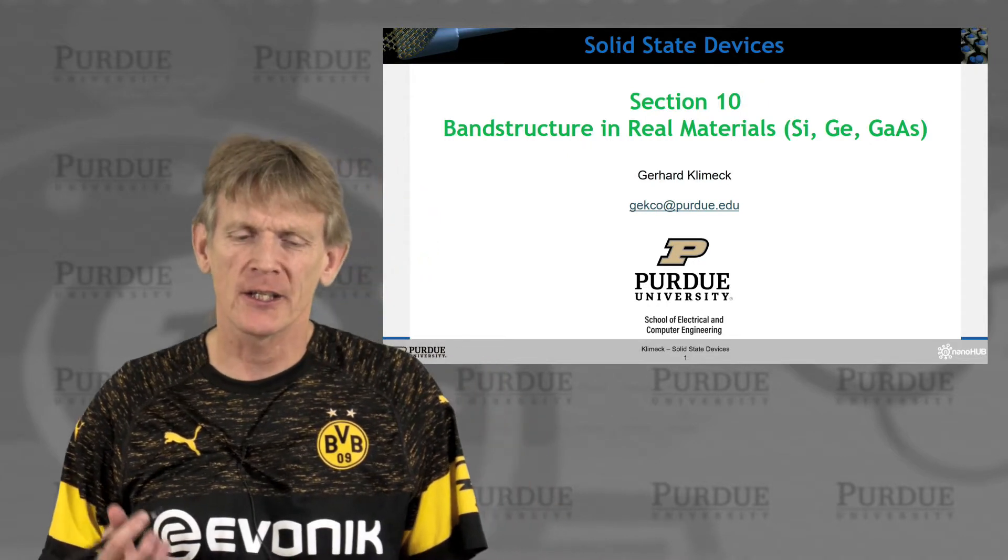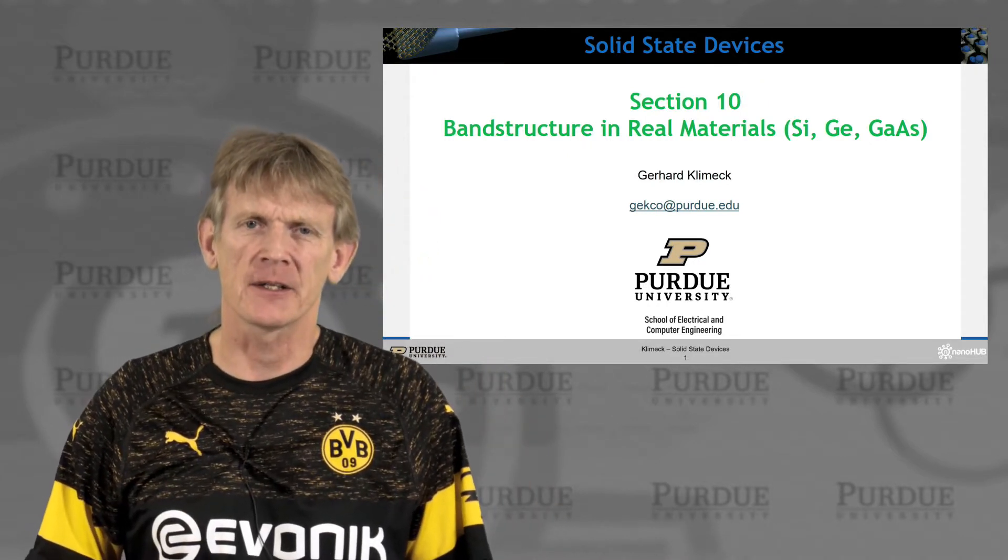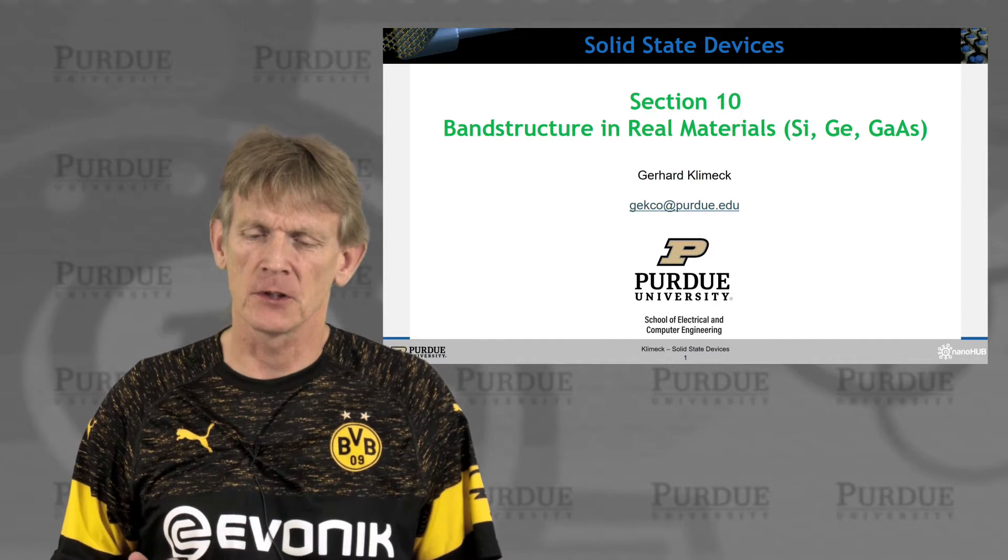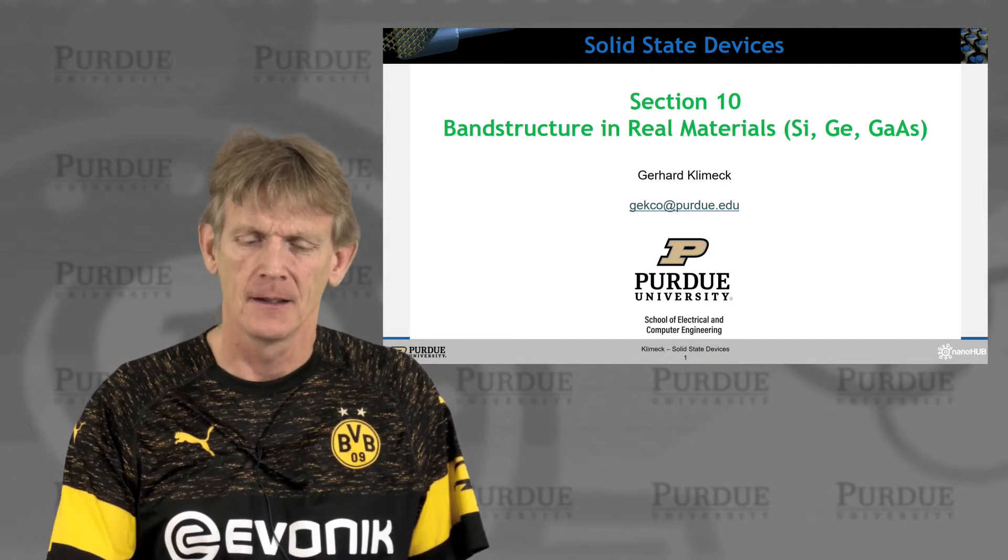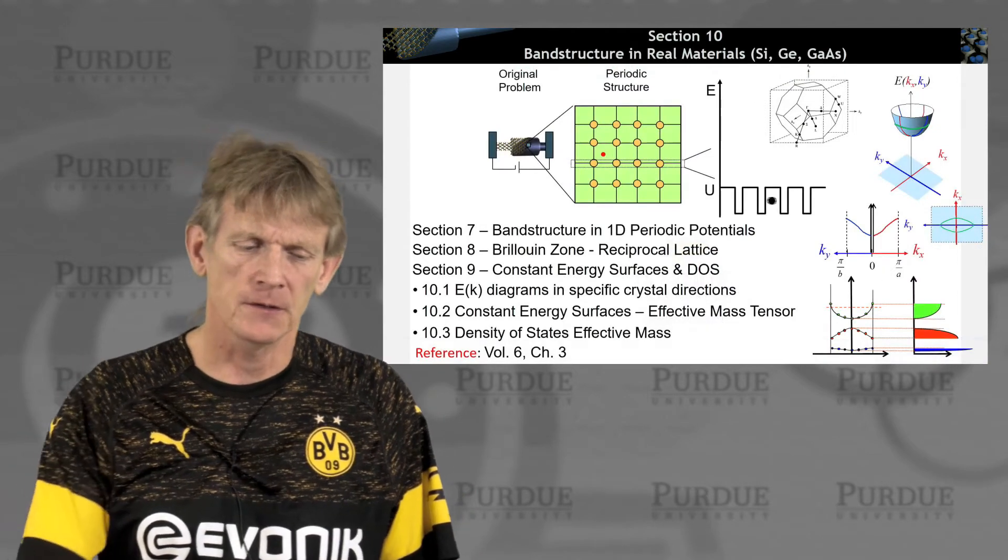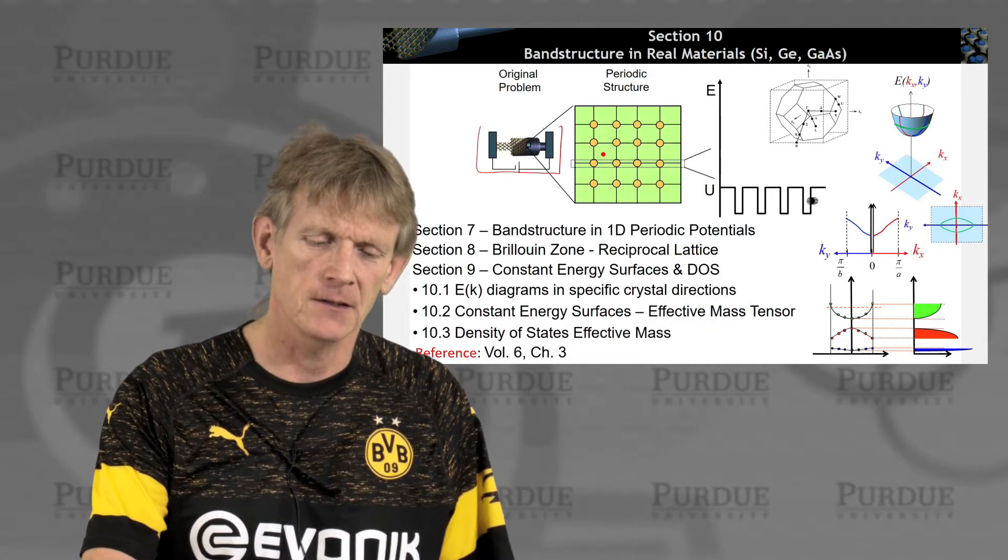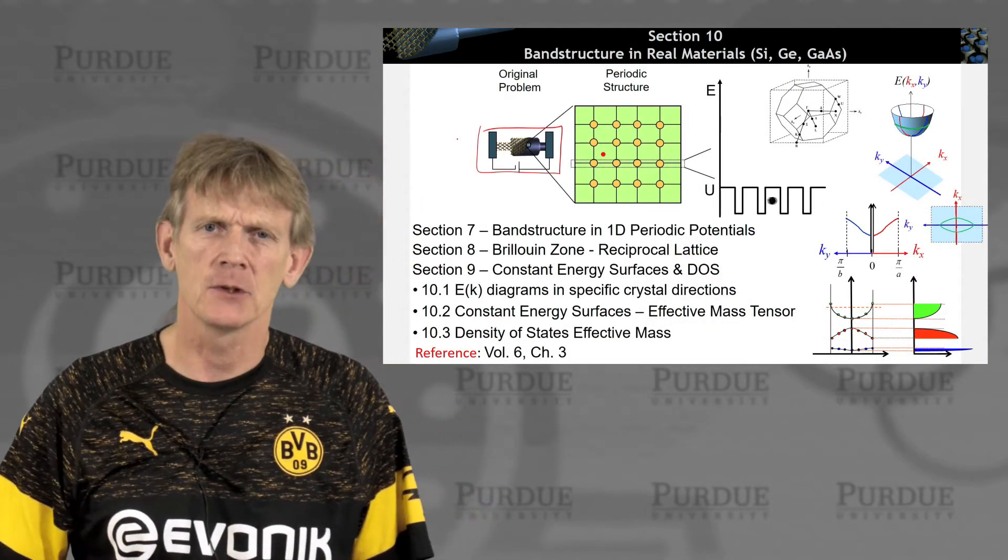So, here we are. We're going to look at, finally, honest-to-goodness band structure in real materials, and we'll look at silicon, germanium, and gallium arsenide. That's in the context, of course, of really trying to understand real materials and real devices.